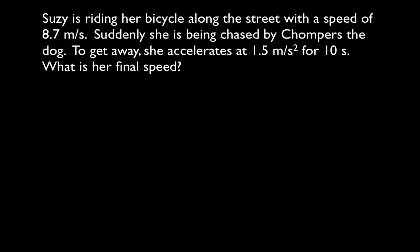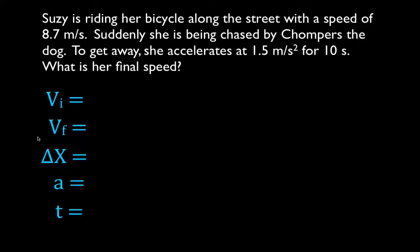We're going to be using our kinematic equations. In the kinematic equations, there are five different variables. The first thing you should do is write down all five of those variables: the initial velocity, the final velocity, the change in position or displacement (delta x), the acceleration, and the time. Then write down what you've been given and what you're trying to solve for.